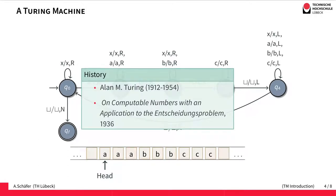The history of the Turing machine goes back to Alan Turing, a British computer scientist who was also a crypto analyst in the Second World War. He introduced the concept of Turing machines in his paper "On Computable Numbers, with an Application to the Entscheidungsproblem" in 1936.